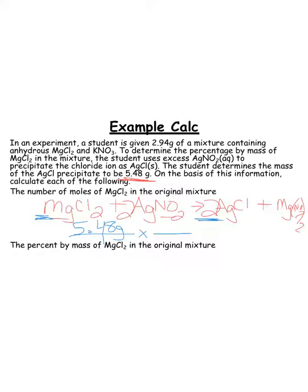First off, I'm going to need the molar mass of my AgCl. So let's go calculate that real quick. My molar mass of AgCl is 143.32 grams, and that's going to give us one mole of AgCl.